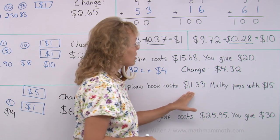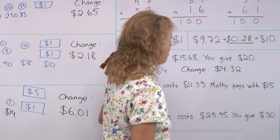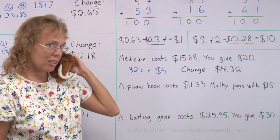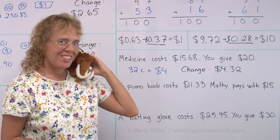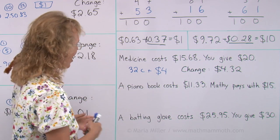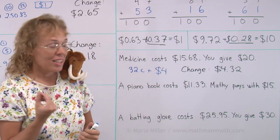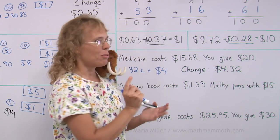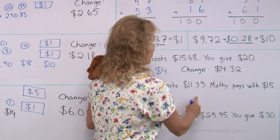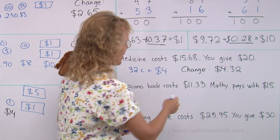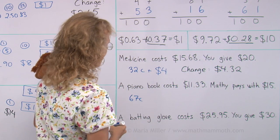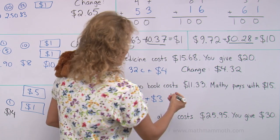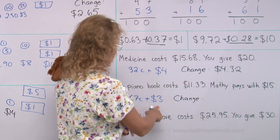A piano book costs $11.33, and Matthew pays with $15. How has it been going Matthew with your piano lessons? Oh, he's saying pretty good. Do you like it? Pretty good. Well, just keep practicing. $11.33. I'll do the same thing. I'll first figure out counting up from 33 cents to the next whole dollar. So this 33 plus what number makes 100? 3 and 6 makes 9, 3 and 7 makes 10. So 6 and 7. 67. And then I am at $12. And then I just need 3 more dollars. So we get the change, $3.67.